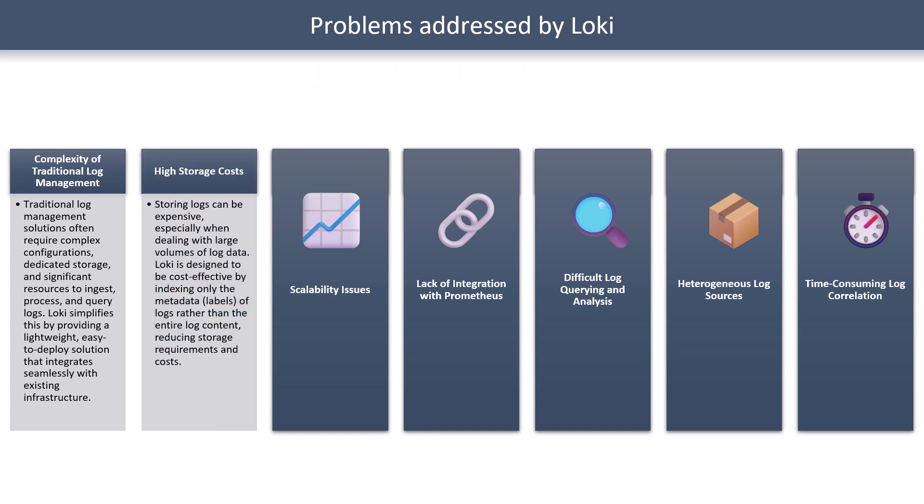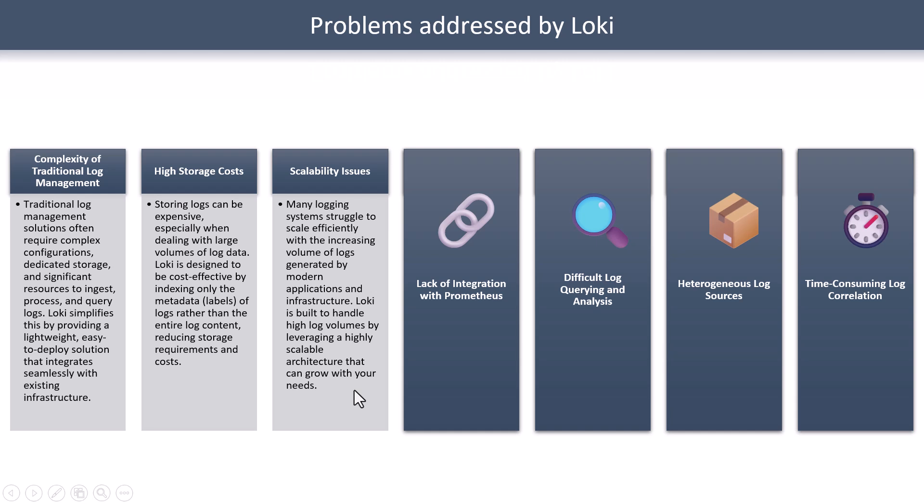The other issue was high storage cost. When storing large volumes of logs and indexing everything, storage costs increase significantly. Loki doesn't index everything line by line — it indexes only metadata (labels), and all remaining log lines are simply compressed and kept in cheaper storage like S3 or any other object storage. This really brings down storage costs substantially. Scalability issues are also solved because Loki's various components can be horizontally scaled across 5 or 50 servers as needed.